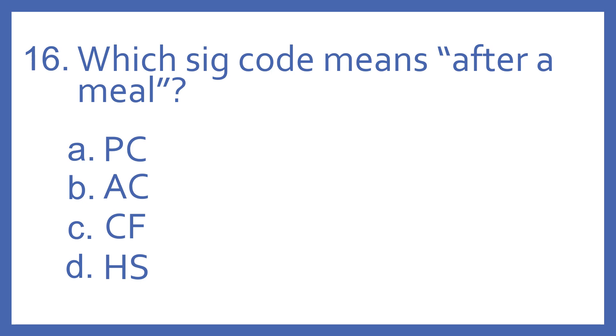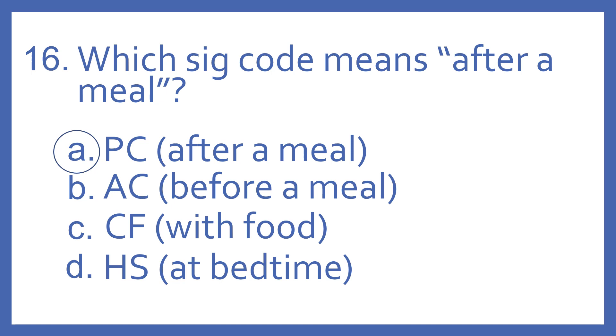Number 16, which SIG code means after a meal? A, PC. B, AC. C, CF. Or D, HS. And the answer is A, PC means after a meal. AC means before a meal. CF means with food. And HS means at bedtime.